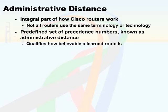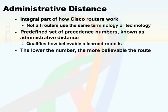Administrative distance qualifies exactly how believable a particular learned route is — whether it was learned because it was directly connected to the router, whether it was entered by you as an administrator, or if it was learned via a routing protocol. Every one of these protocols and other means of information being entered into the table is given a number. The lower the number, the more believable the route, and a lot of these will be based upon Cisco's qualification of a routing protocol and how good its metric really is.